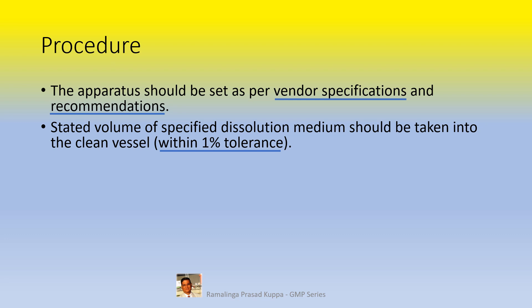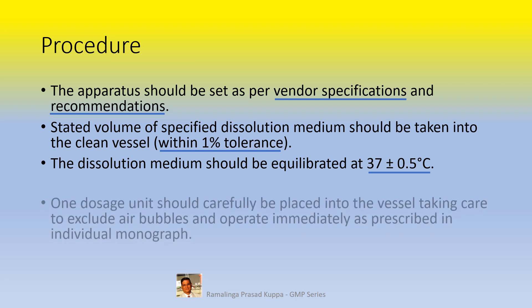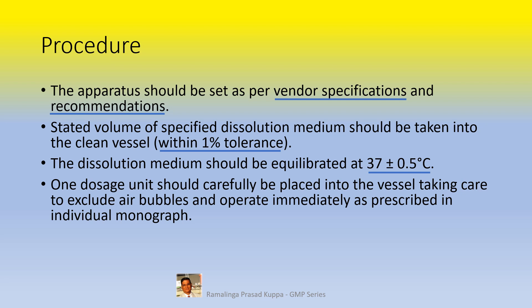For example, if the volume is 900 ml, the volume taken should be between 891 ml and 909 ml. The dissolution medium should be equilibrated at 37 ± 0.5 degrees Celsius. The water bath in which the vessel will be immersed should be filled up to the mark and maintained at 37 ± 0.5 degrees by a suitable heating and circulation system, so that the vessel with the dissolution medium is also maintained at that temperature. One dosage unit should carefully be placed into the vessel, taking care to exclude air bubbles, and operated immediately as prescribed in the individual monograph.